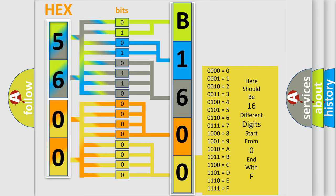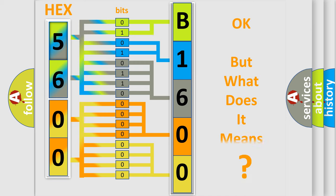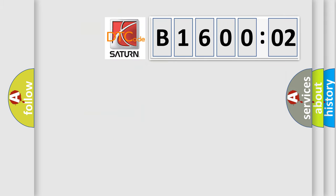We now know in what way the diagnostic tool translates the received information into a more comprehensible format. The number itself does not make sense to us if we cannot assign information about what it actually expresses. So, what does the diagnostic trouble code B160002 interpret specifically?